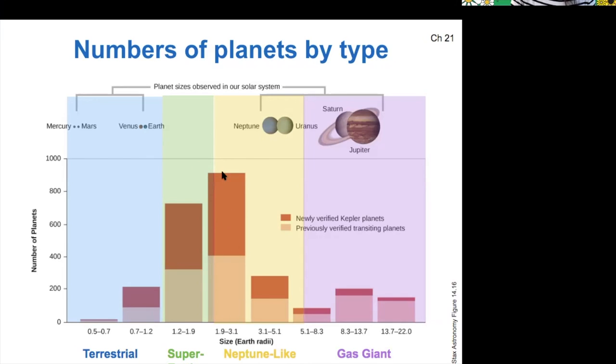So it seems like we're missing in our own solar system the most common type of exoplanets, which is a little strange.